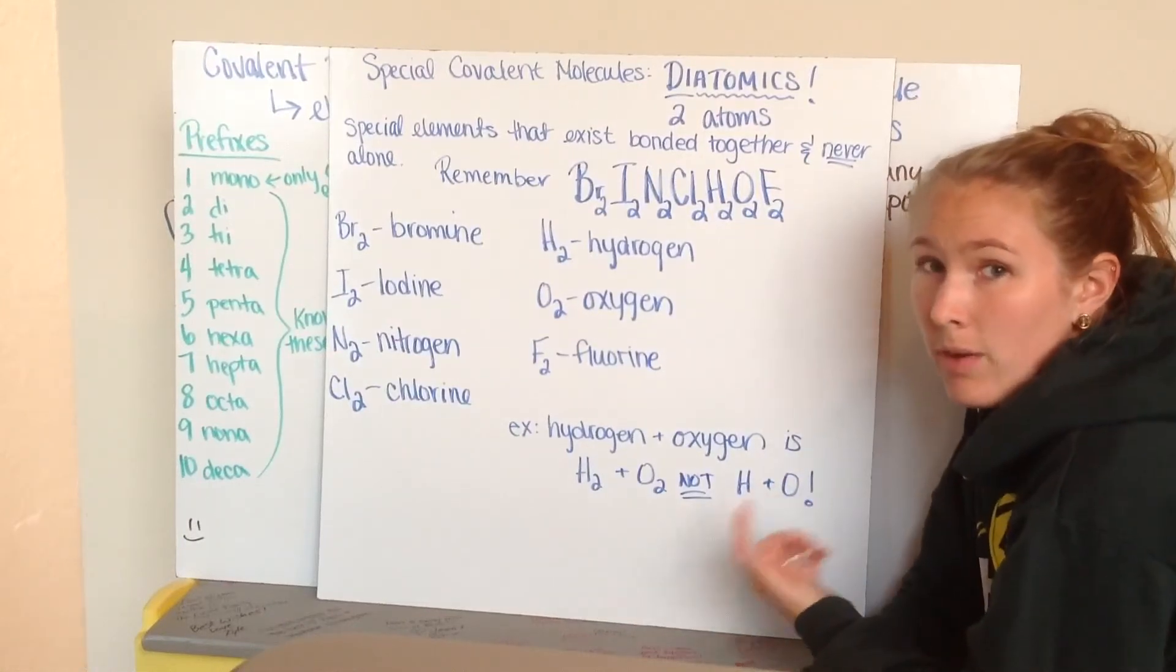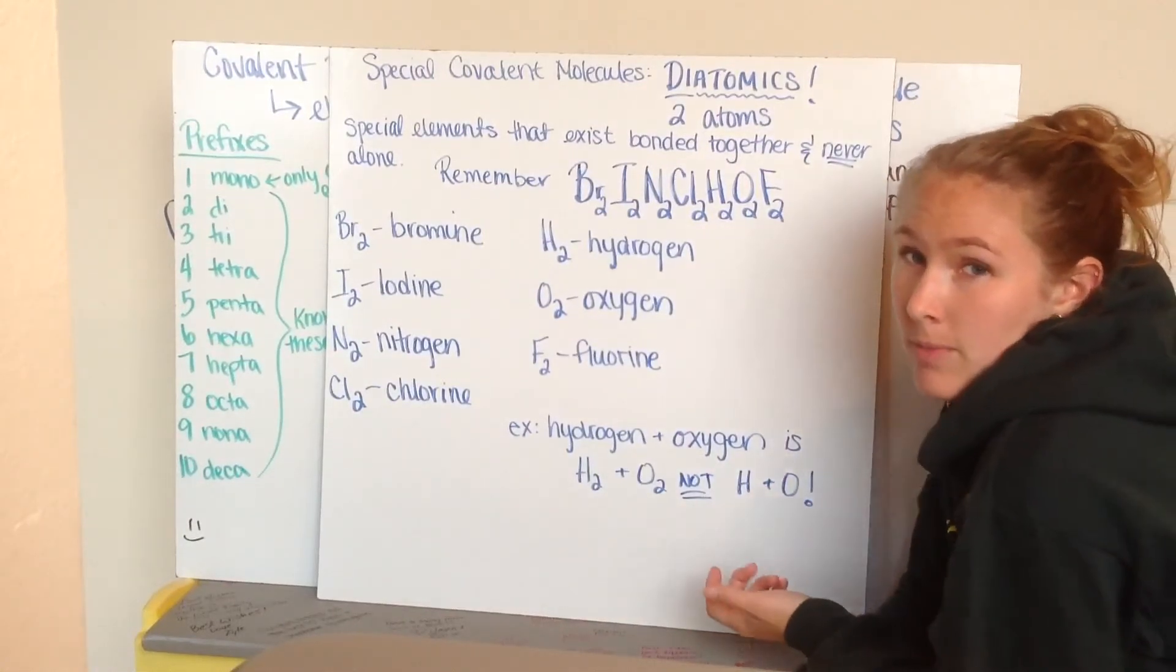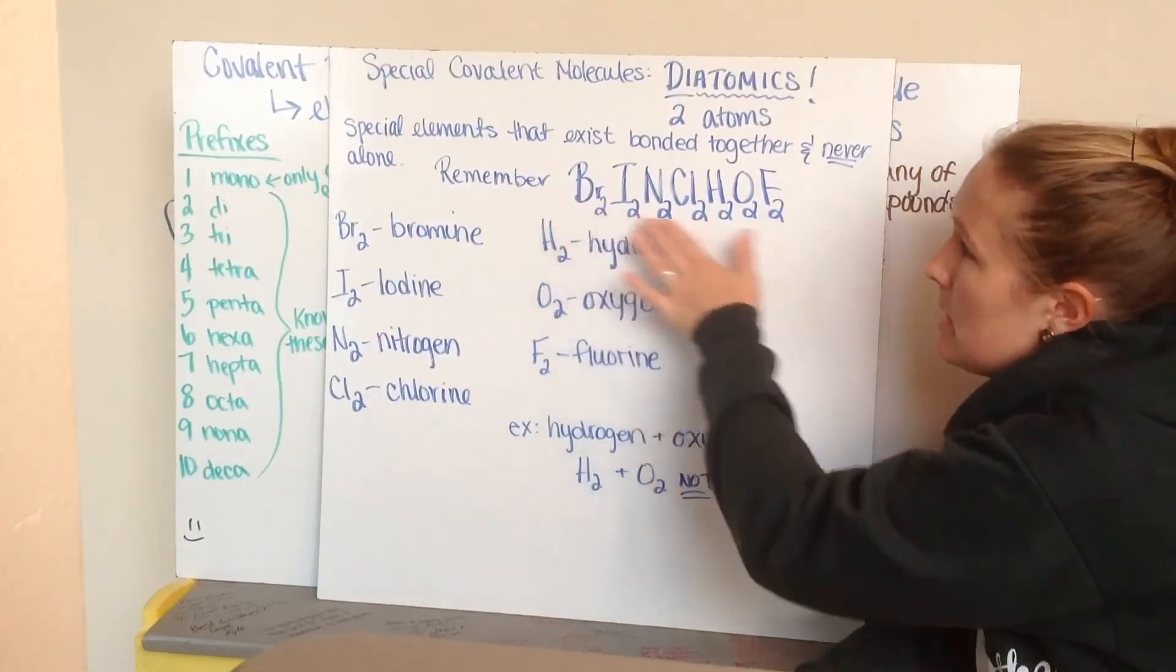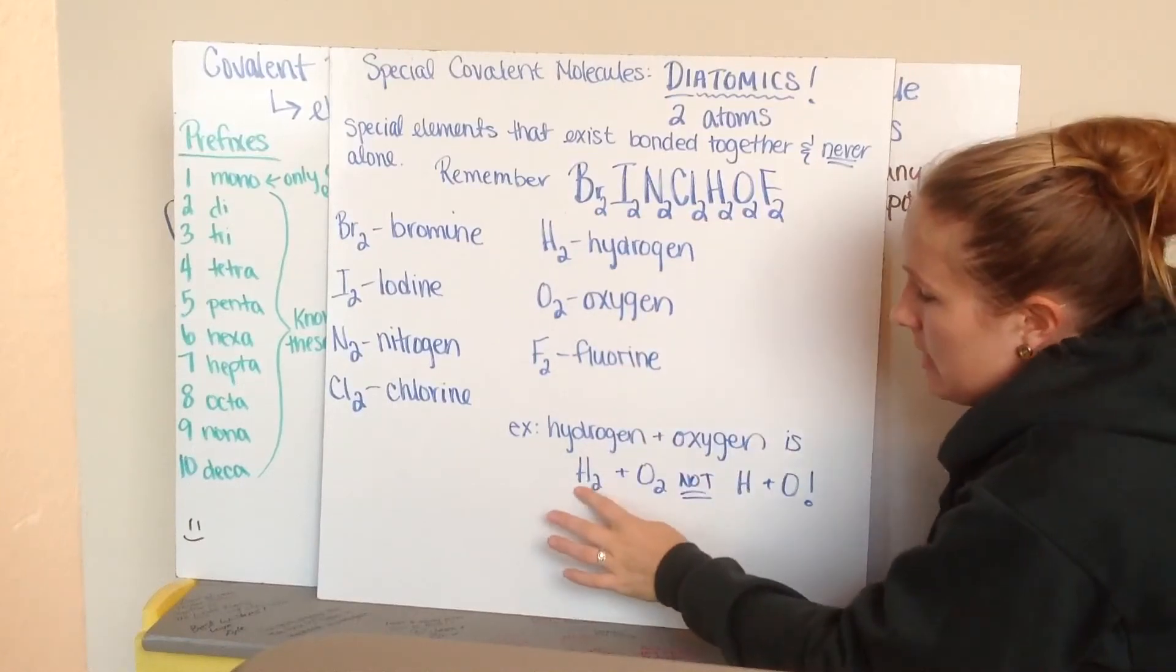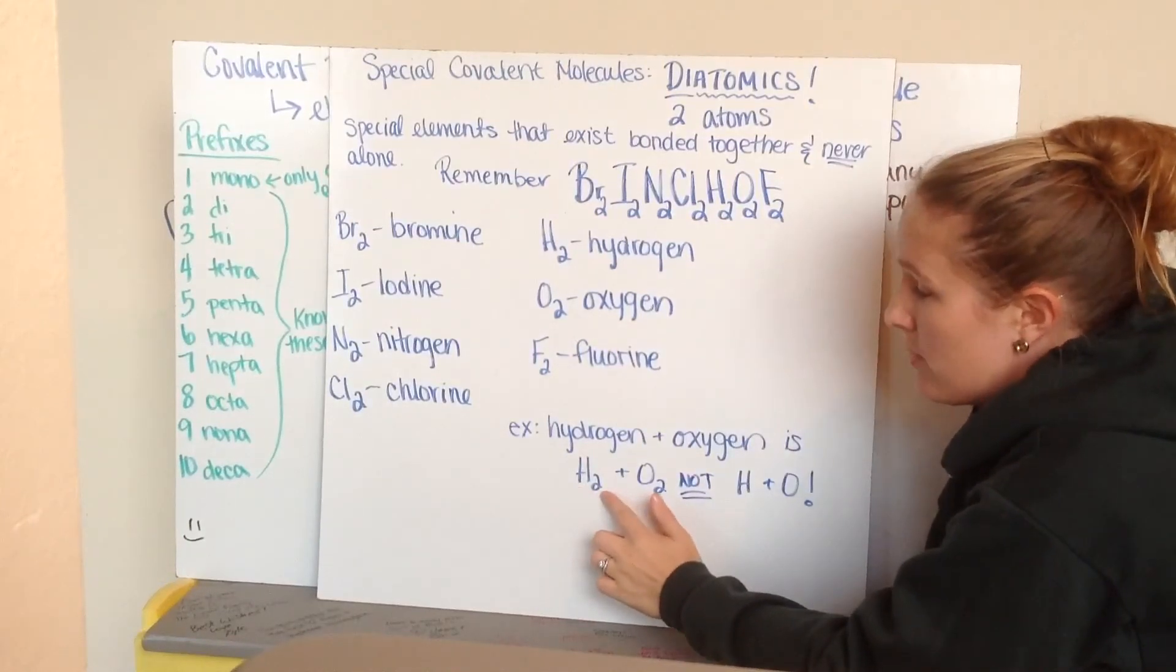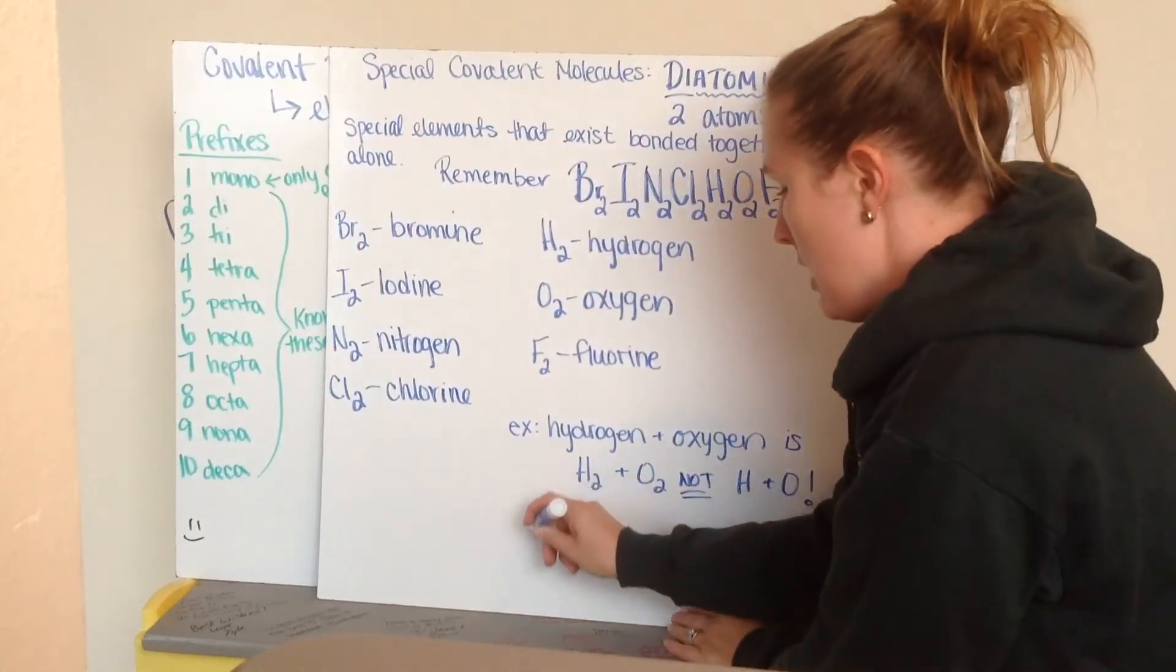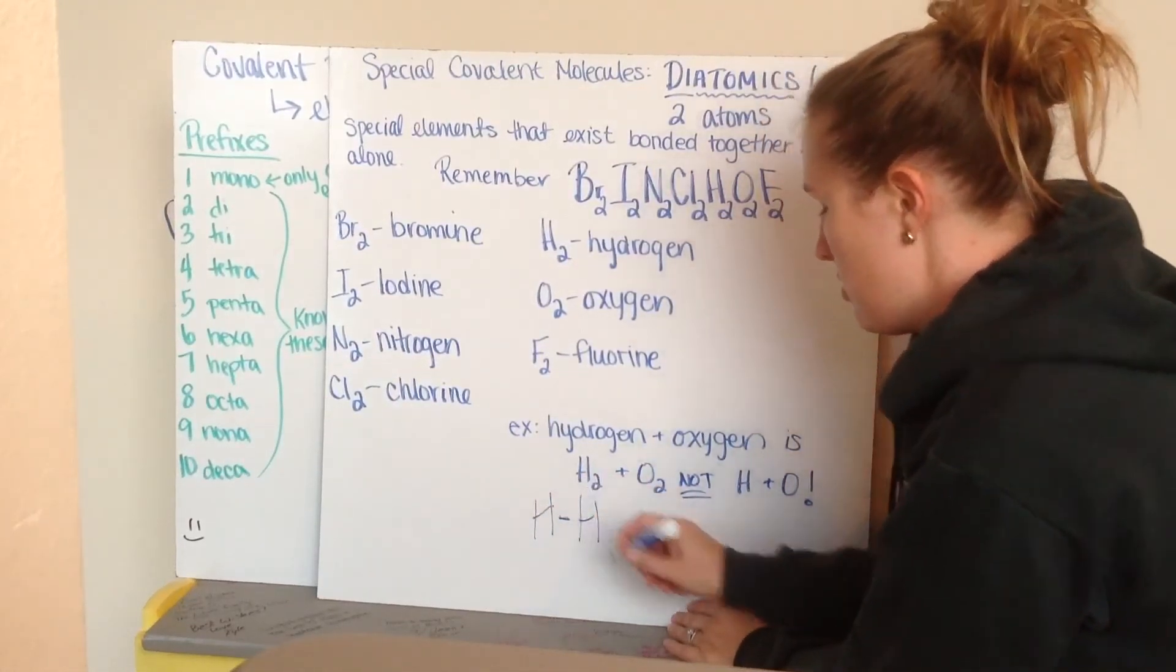So, when you're writing out chemical reactions or writing out compounds for different names, if you run into these diatomics, you'll write the element with a two after it because it's bonded together. So, for example, hydrogen would be hydrogen bonded to another hydrogen.